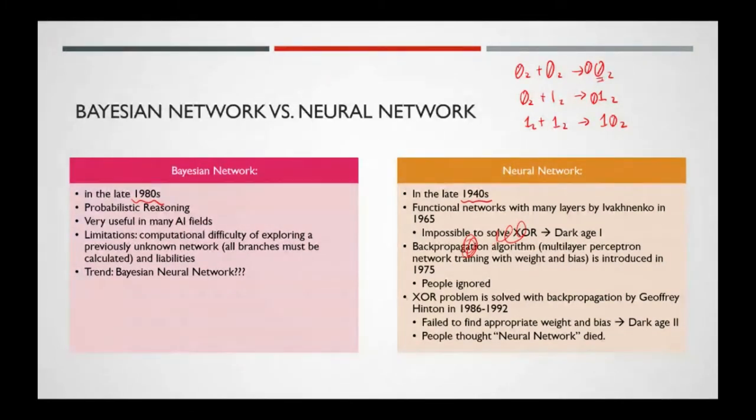So the 1's digit is the result of XOR gate. The 2's digit was AND gate. But there was a problem. We could not solve XOR. That means we could not do simple addition.